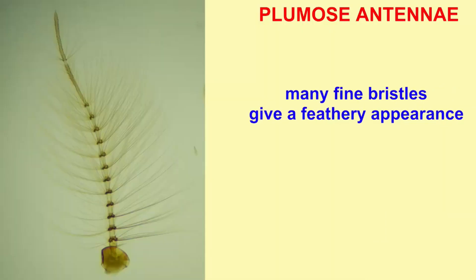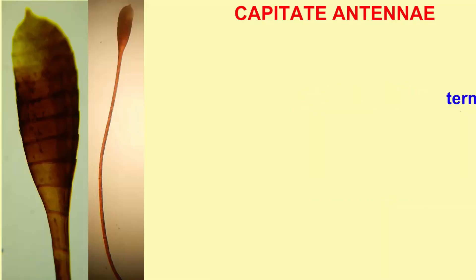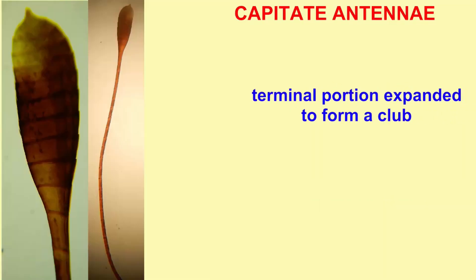In the plumose antennae found in mosquitoes and moths, many fine bristles give them a feathery appearance. In capitate antennae, the type possessed by butterflies, the terminal portion is expanded to form a rounded club.